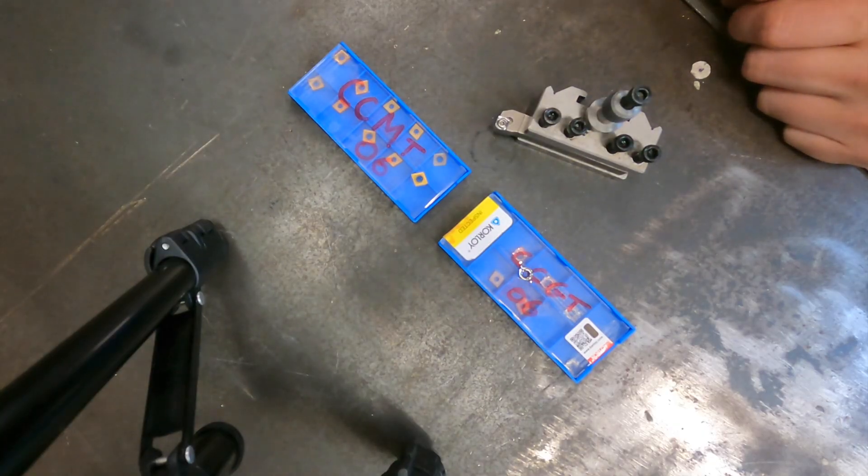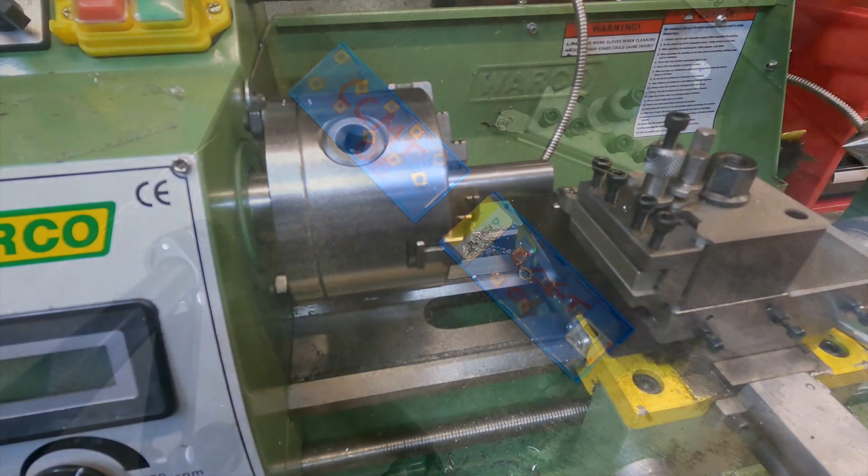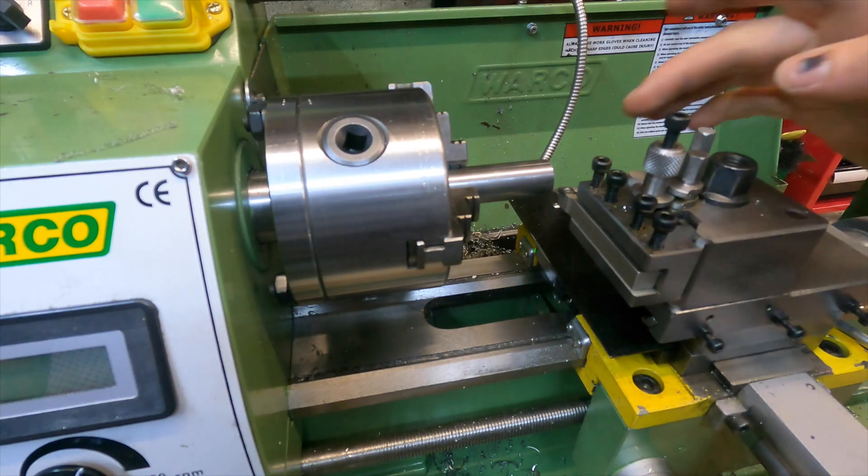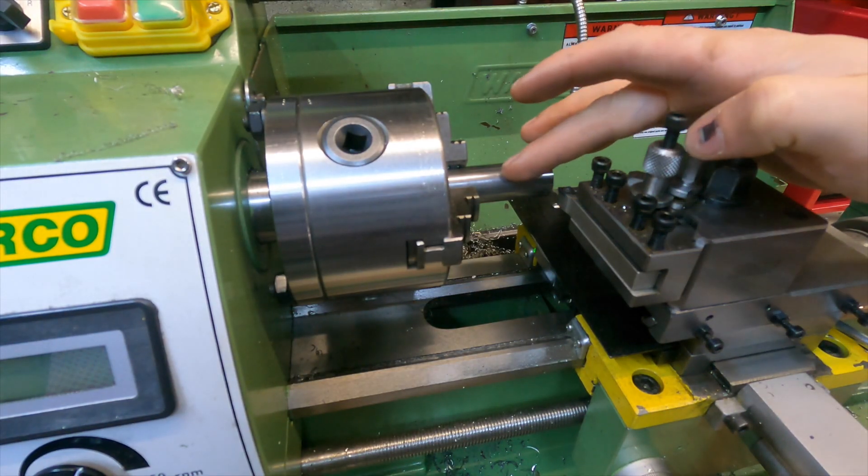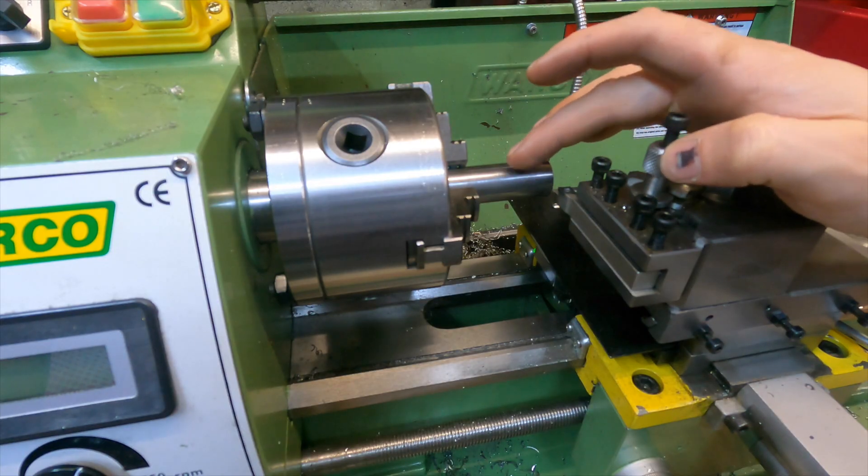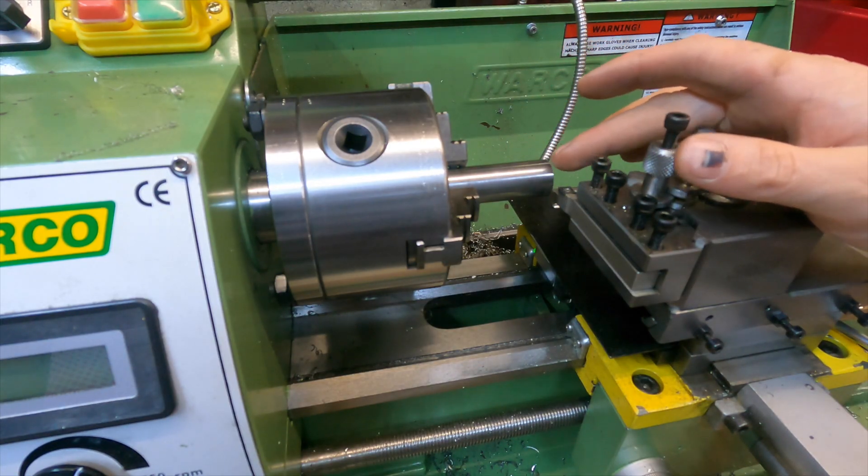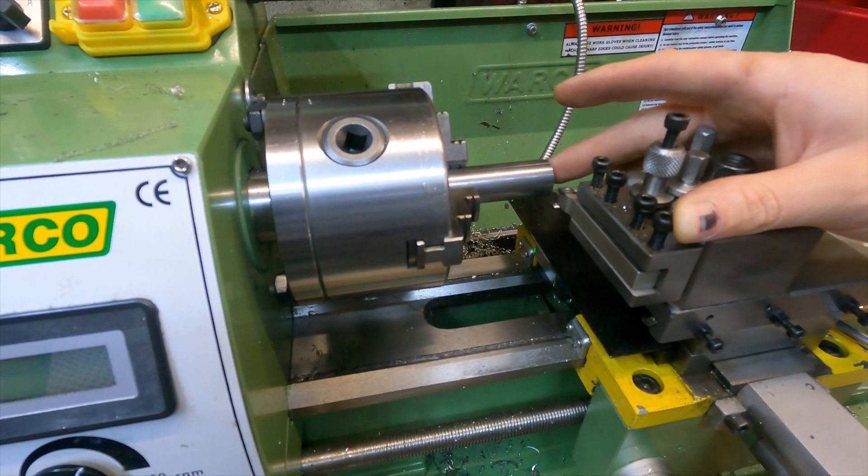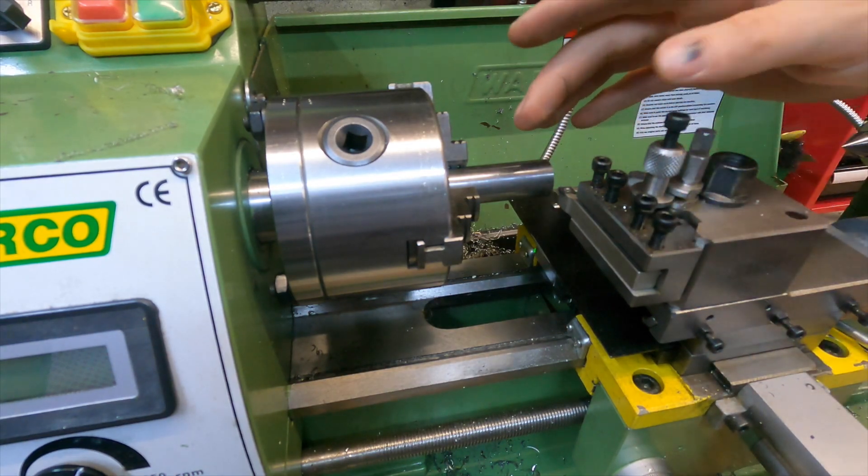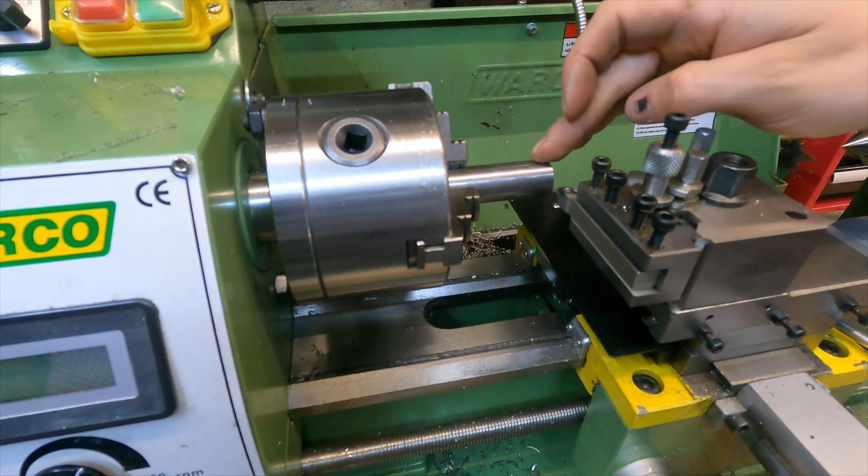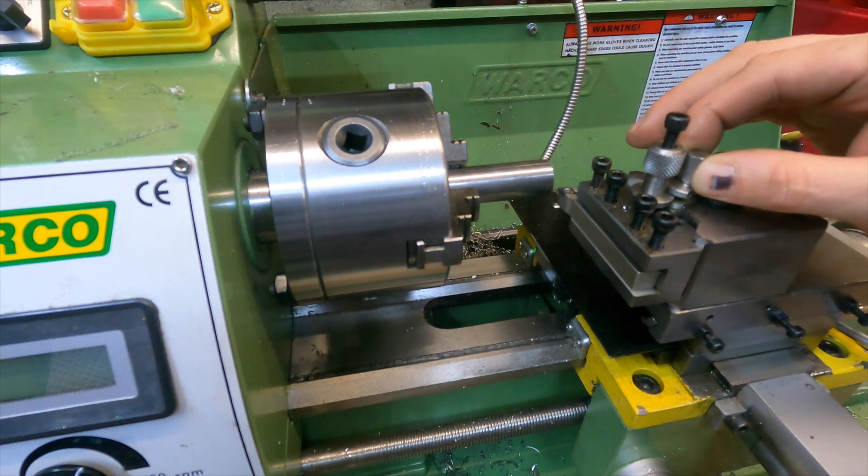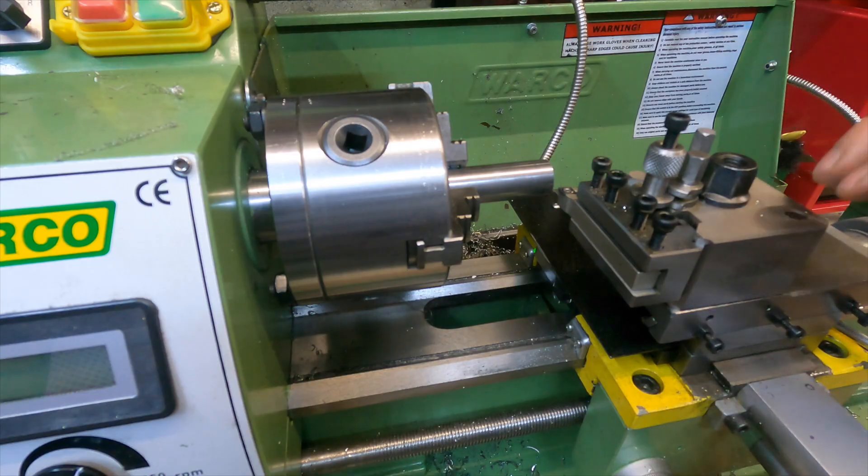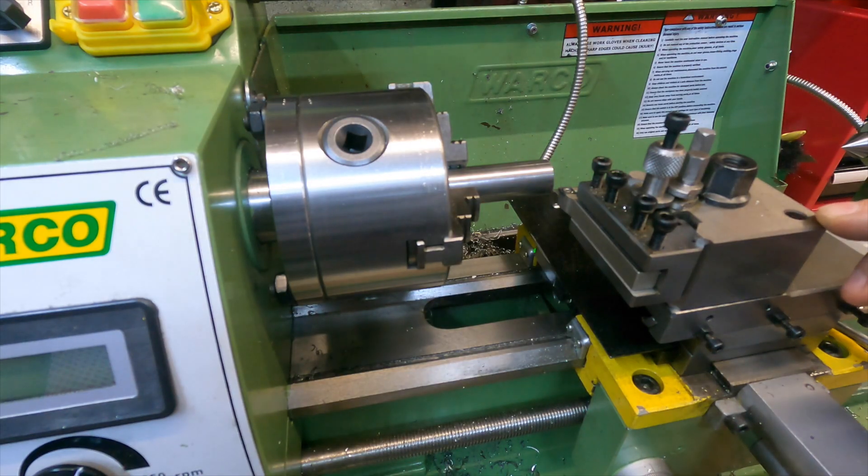Let's jump straight over to the lathe now. We're going to test this out on mild steel starting with the CCGT. We're going to do a facing off pass and then a 0.25 millimeter cut, look at the finish, and then do a 0.5 millimeter depth of cut. To keep this test as similar as possible I've got a 40 mil stick out and I'm going to run the lathe at about 750 RPM. But once it's running I'm not going to adjust the speed at all.